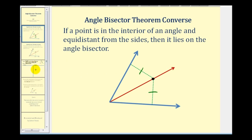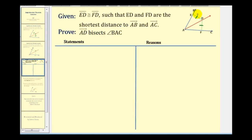Let's see if we can prove this. We're given that segment ED is congruent to segment FD, and the length of ED and the length of FD are the shortest distance to ray AB and ray AC. We want to prove that ray AD bisects the blue angle, angle BAC.